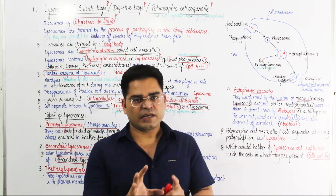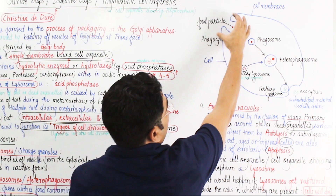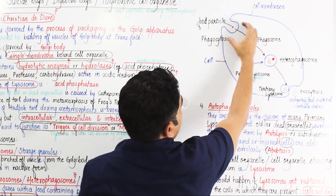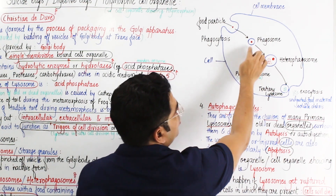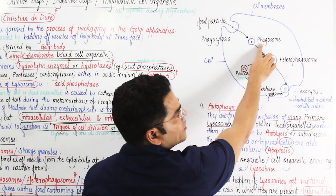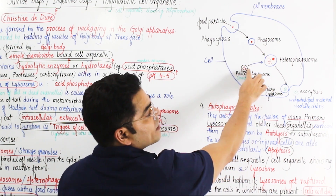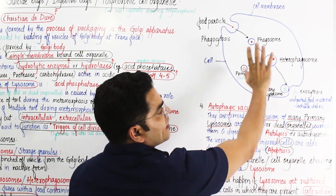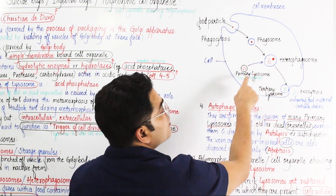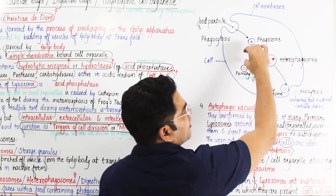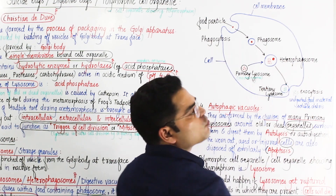Now suppose a cell engulfs a food particle by phagocytosis — a process called endocytosis. The food-containing vesicle is called a phagosome. The primary lysosome, containing inactive enzymes, then fuses with this phagosome. The resulting structure is called a heterophagosome.